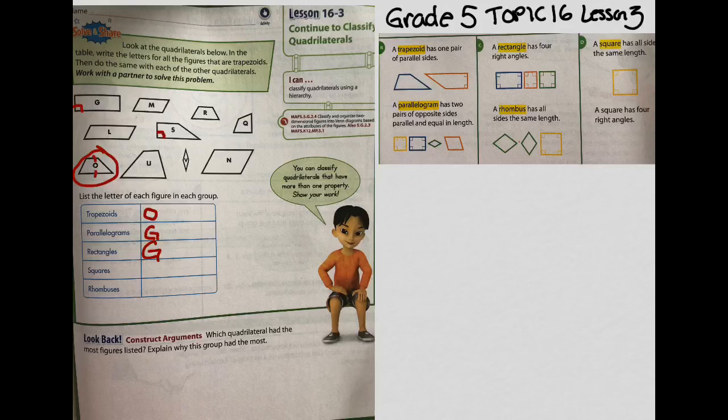A square. A square has all sides the same length and four right angles. Do we see any shape that has all four sides that are the same length? Well, G's not, M's not, R's not, not Q, not N, not V, not S, not L, not O, and not U. So squares, there are none. So I'm just going to write none.